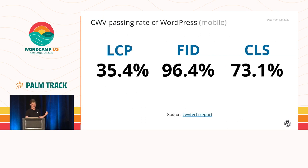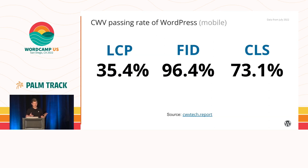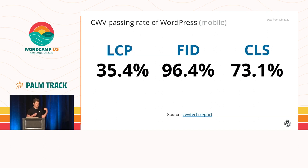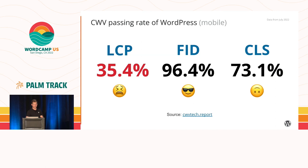So how are WordPress sites doing in that regard? The answer is not that good. WordPress has a great FID passing rate and CLS is okay, but LCP — loading performance — is really not looking good. Seeing 35% here basically means that 65% of all WordPress sites out there load their main content too slowly to provide a good user experience. That leads people to leave your website before they even start browsing your content, and you lose potential clients, potential customers.